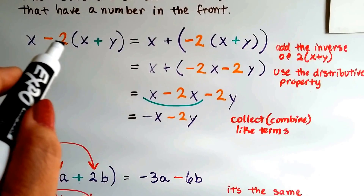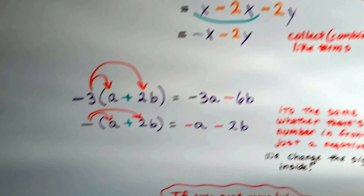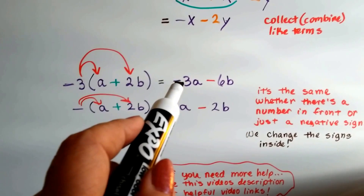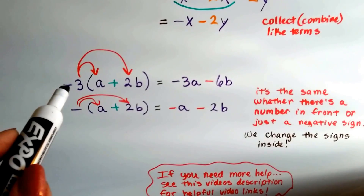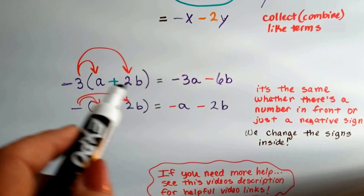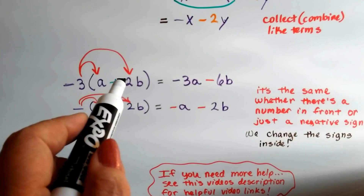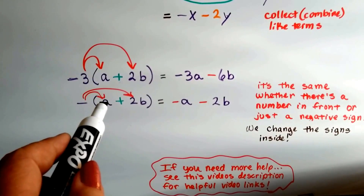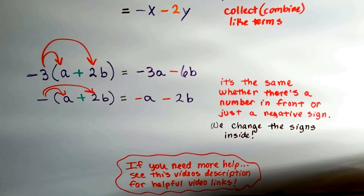Whether there's a number here or just a negative sign, we can still distribute this negative to what's inside the parentheses. Remember when we did the distributive property and had negative 3 times a giving negative 3a, and negative 3 times positive 2b giving negative 6b? Same thing. A negative with a number changed a to negative and changed positive 2b to negative — we just changed the signs on the inside. And even if that 3 wasn't there, a negative times a is negative a, and negative times positive 2b is negative 2b. It's the same whether there's a number in front or just a negative sign.